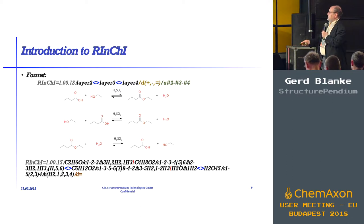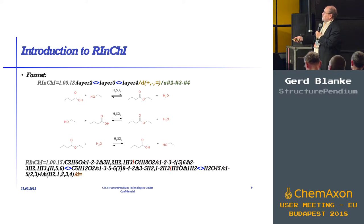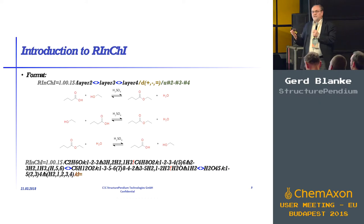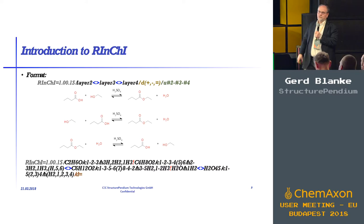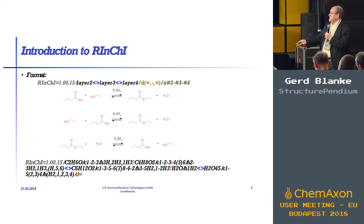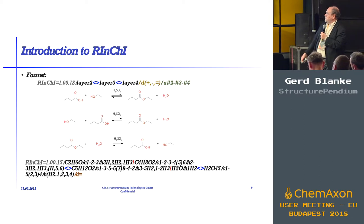To build the RInChI, we take each of the InChIs and order them alphabetically. Then we have layer 2 and layer 3. For equilibrium reactions, you don't know which layer is first, so we need a unique representation — again, we use sorting. This at the end comes up to this long string which represents the equilibrium reaction, with D equals for the equilibrium at the end.